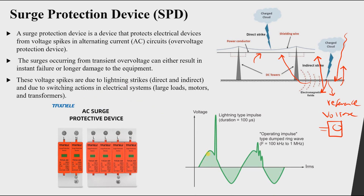Looking at waveforms — for a normal 220V phase voltage, a lightning strike causes a very large overshoot in voltage for a very short time. The operating impulse due to switching actions produces a smaller impulse. The difference in magnitude means we have different types of SPDs: one for lightning strikes and one for switching actions, each with their own waveform.